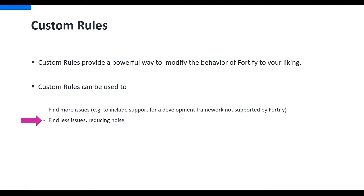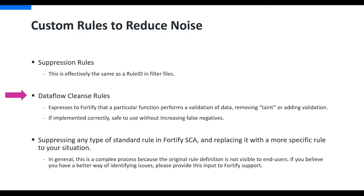Another option is to write custom rules. In general, these are used to either find more issues or to find less issues - less noise. Today we'll focus on using custom rules to reduce noise. There are three rule types you can write to reduce noise: suppression rules, data flow cleanse rules, and suppressing rules and replacing them with more specific custom rules. Suppression rules eliminate a rule from Fortify processing and are very similar to filtering by rule ID as mentioned earlier.